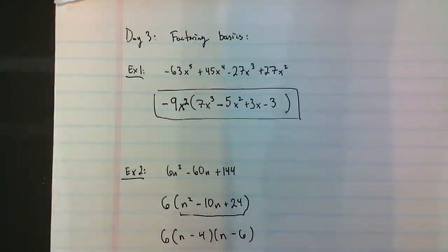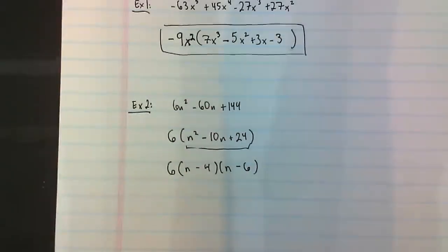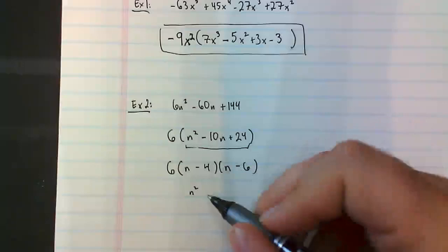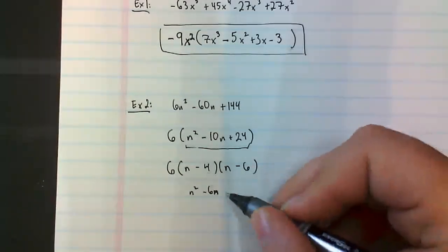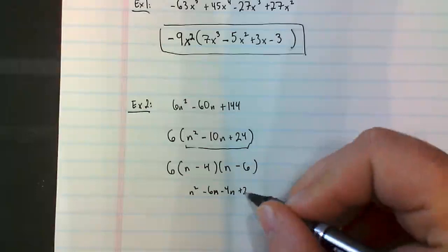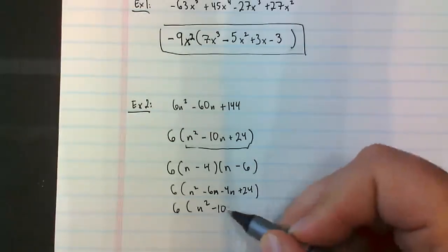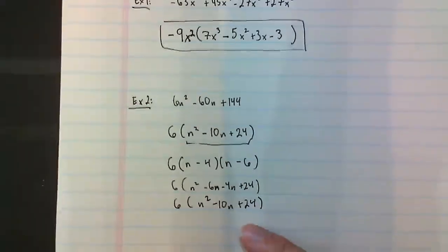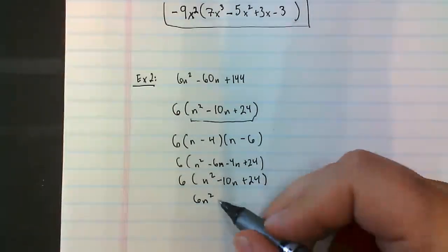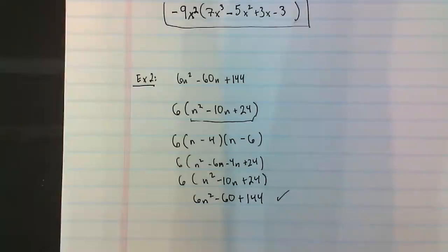Those numbers are negative 4 and negative 6. Negative 4 times negative 6 is positive 24, and negative 4 plus negative 6 is negative 10. An easy way to check if we factored correctly is to multiply it all through again. N times N is N squared, N times negative 6 is negative 6N, negative 4 times N is negative 4N, and negative 4 times negative 6 is positive 24. Don't forget your 6 outside. If you distribute the 6 through, it shapes back up to what we started with, so it checks out.